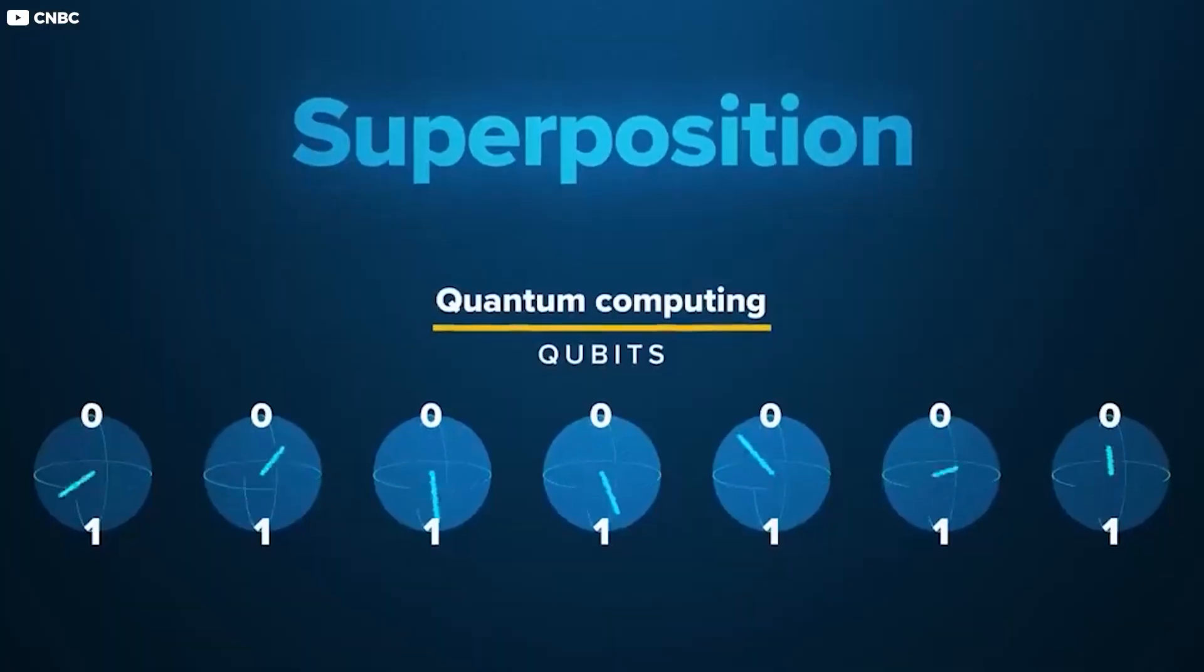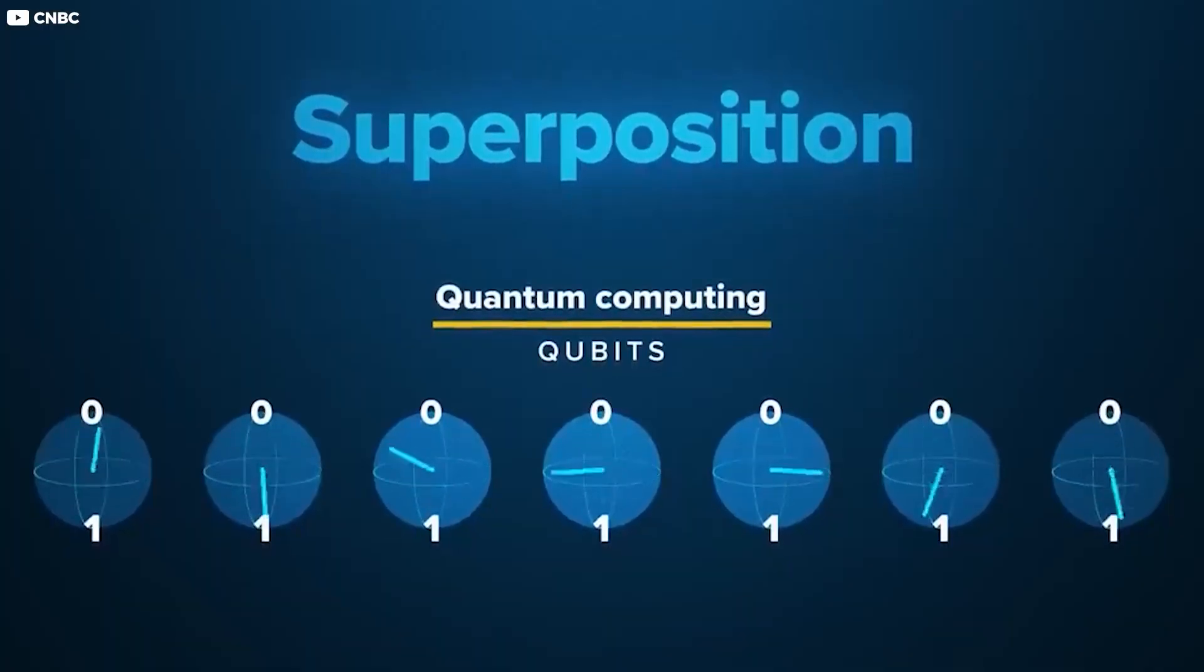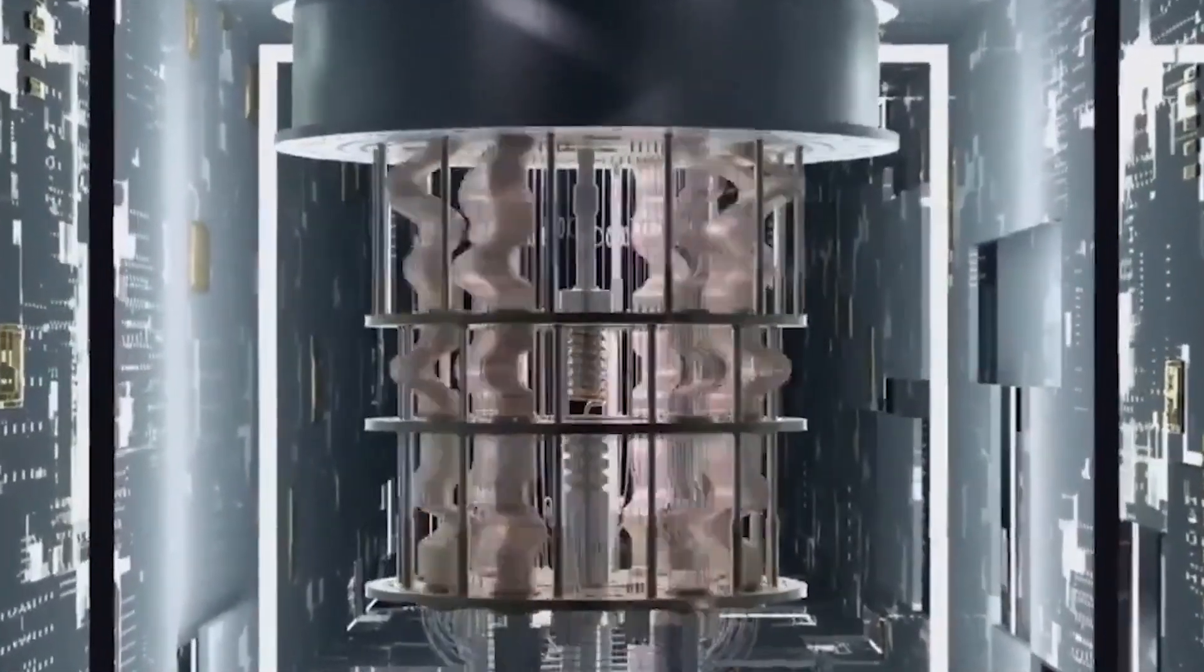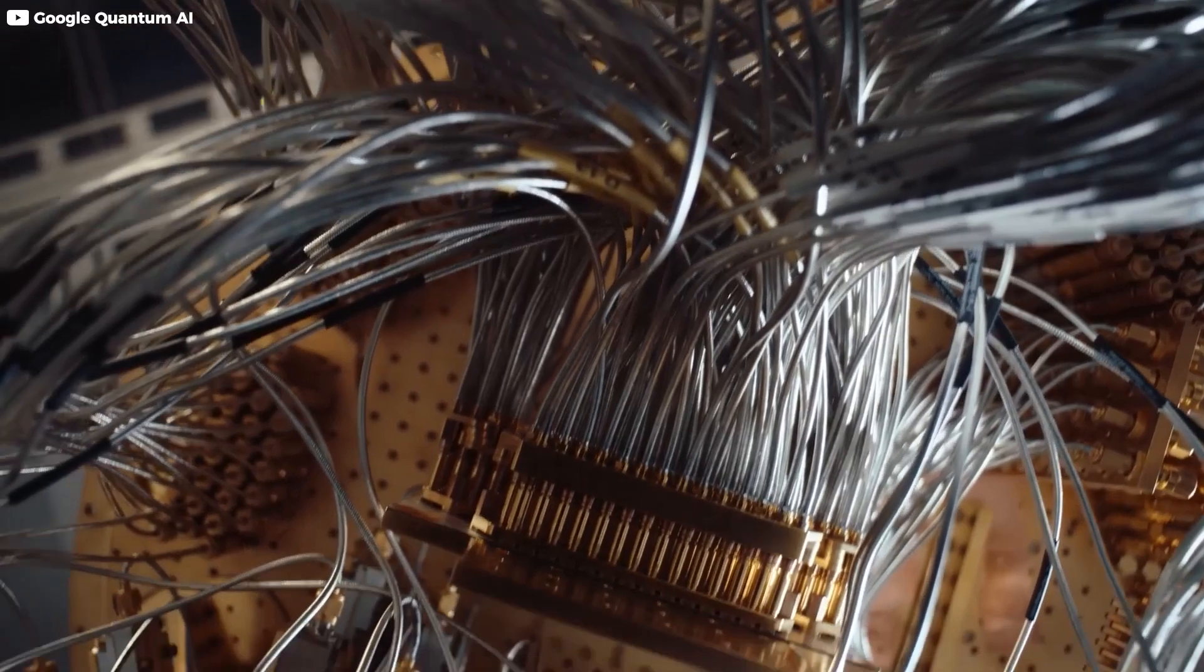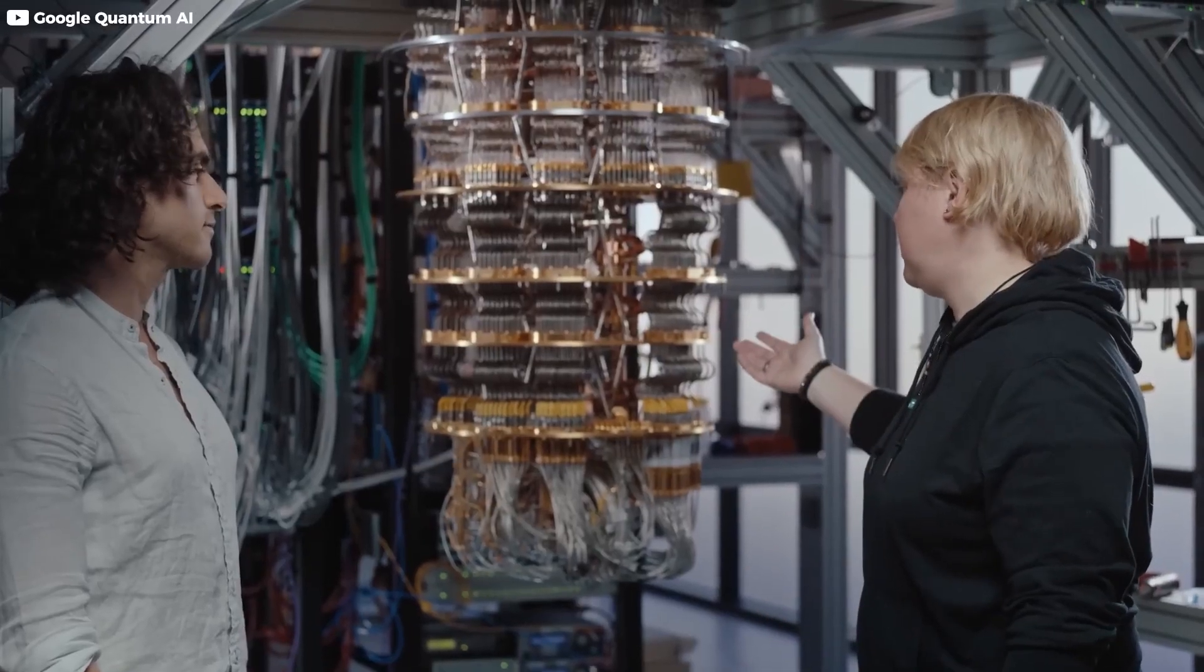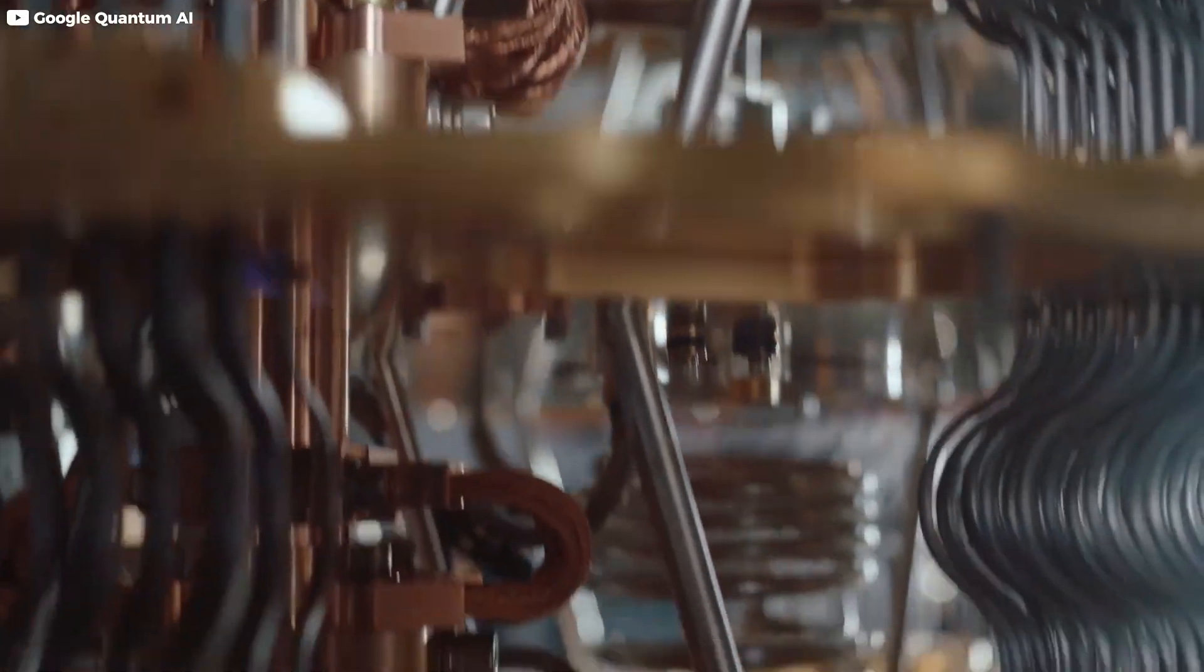Qubits can exist as both one and zero at the same time. This strange behavior is called superposition. It's what makes quantum computers so powerful. They can process far more data faster than anything we've ever seen.